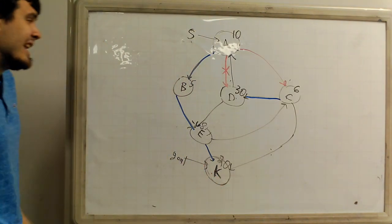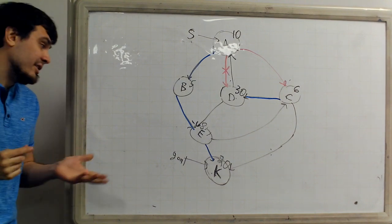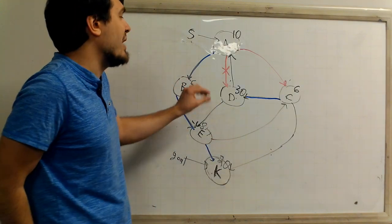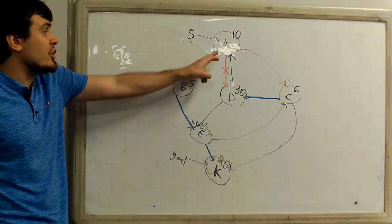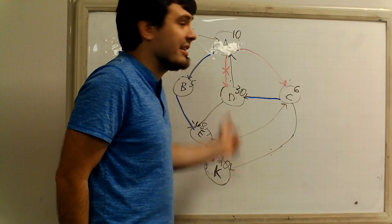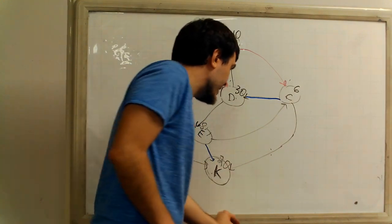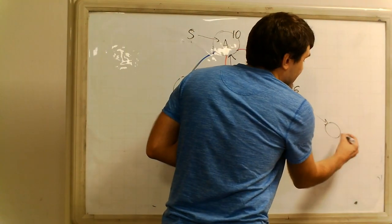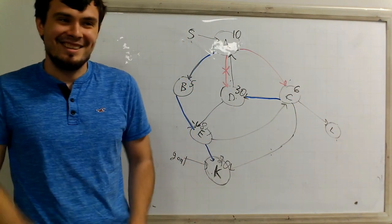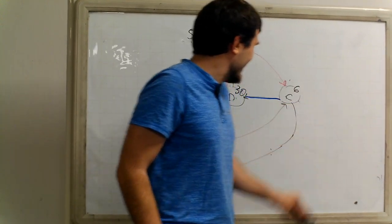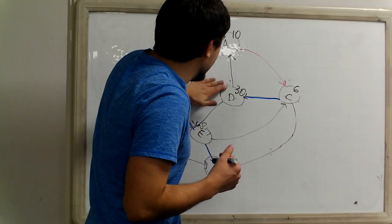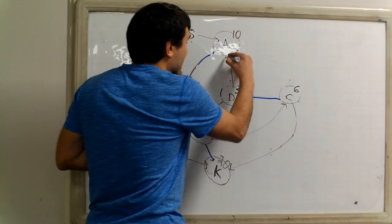This doesn't look easy — it seems like you'd have to try removing various subsets of edges, then follow the path to see if it eventually leads to the destination or gets stuck in an infinite loop. But it actually has a very simple solution: a surprisingly easy principle that ties back to shortest paths with weights.